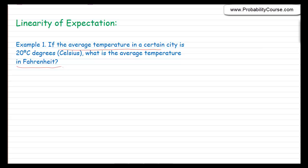If we pick a random day and measure the temperature in that day — let's say we measure the temperature at noon and call that value x — then x is a random variable, because it depends on which day you choose. The question states that the expected value of x is 20 degrees.